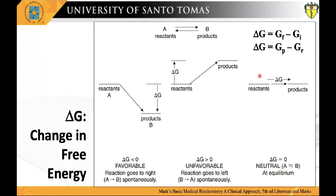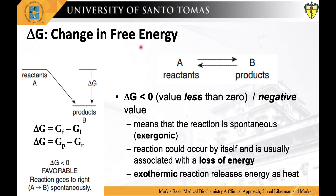This energy diagram represents three possible energy scenarios of reactions that will give different values of delta G. When the free energy level of the products is lower than that of the reactants, delta G is less than zero — a negative value — meaning that the reaction is exergonic and can spontaneously occur. An exergonic reaction can occur by itself and is usually associated with the loss of energy. An exothermic reaction releases energy as heat in this case.